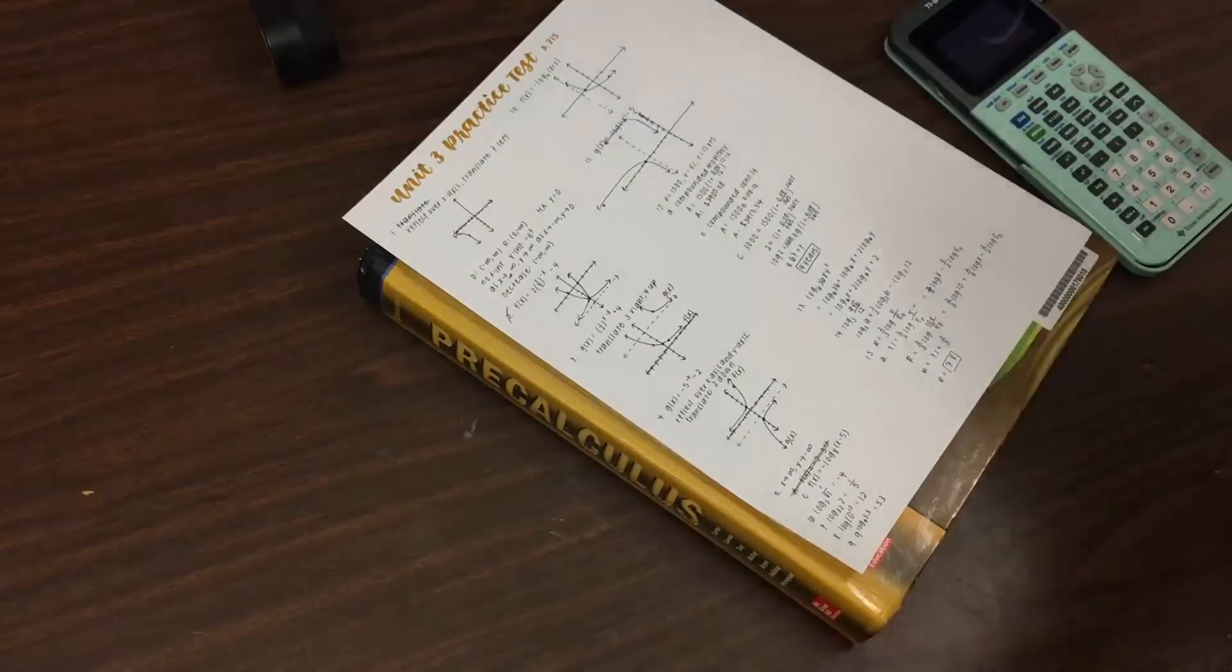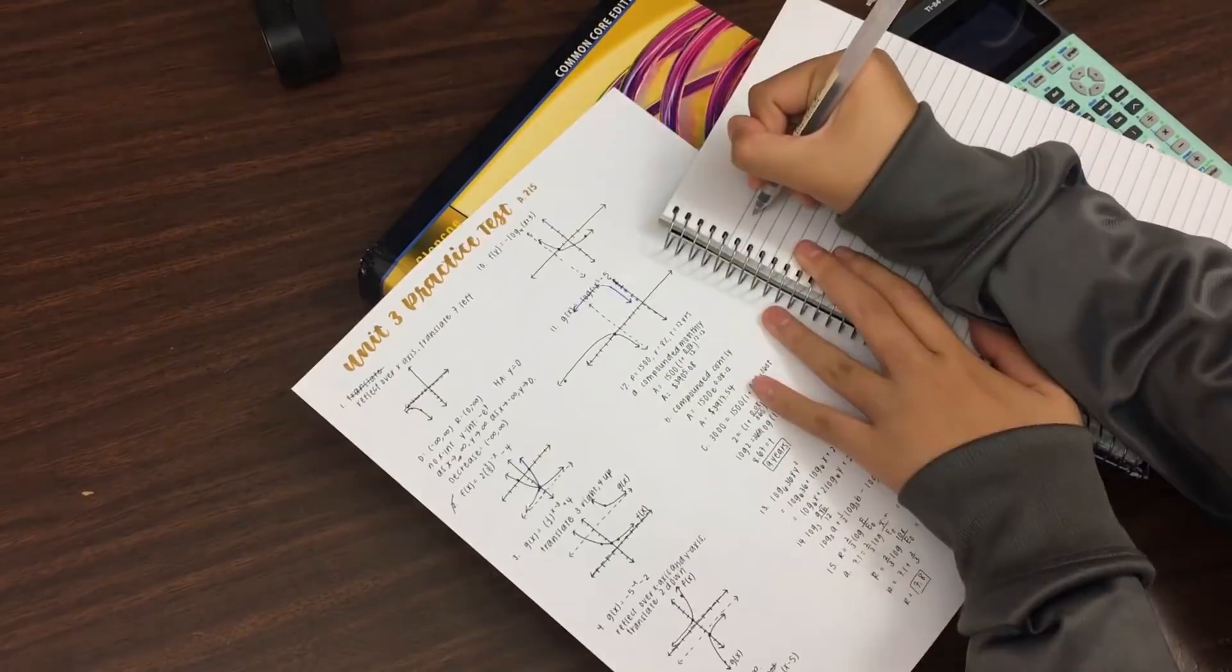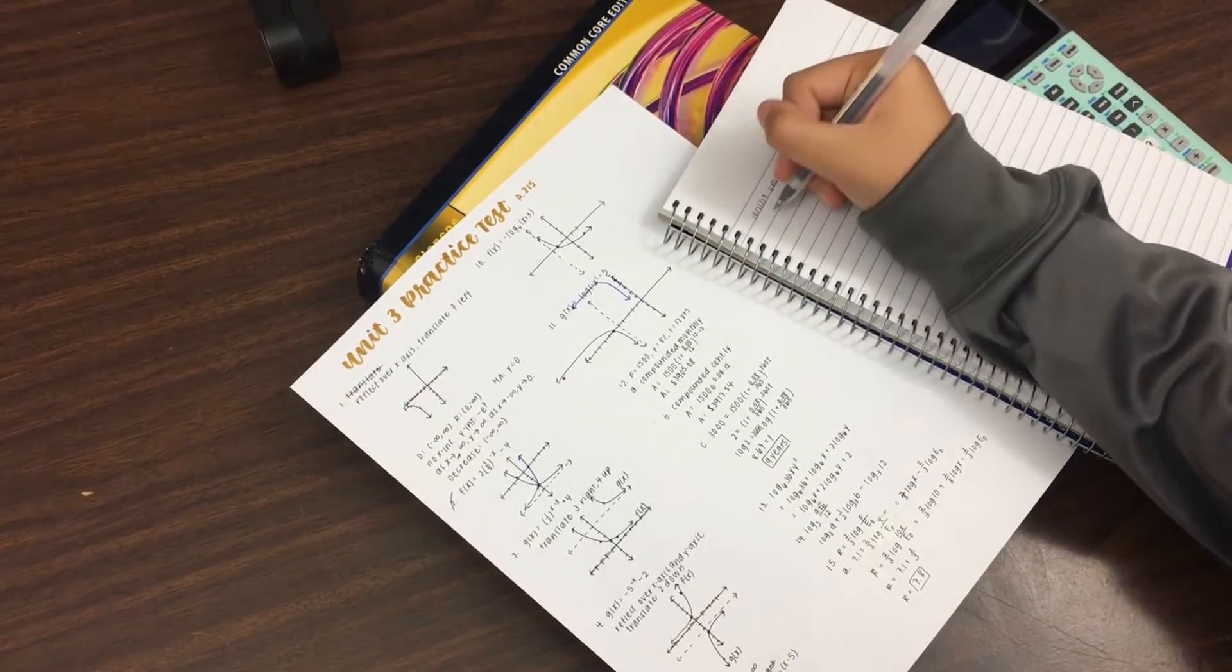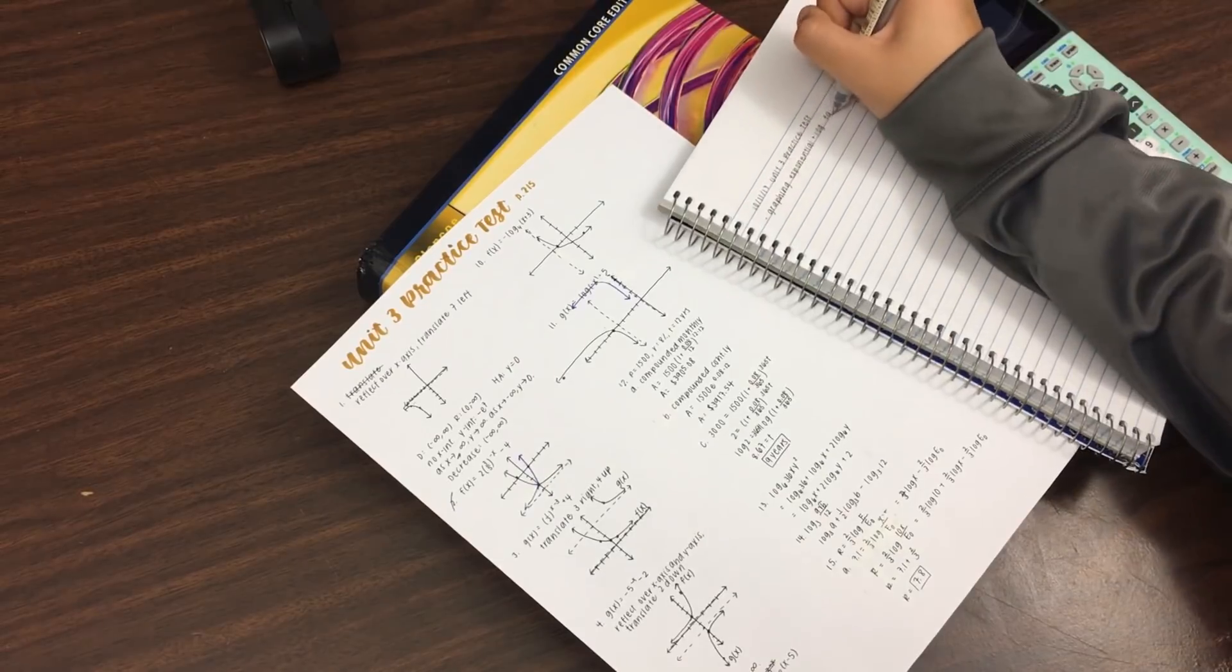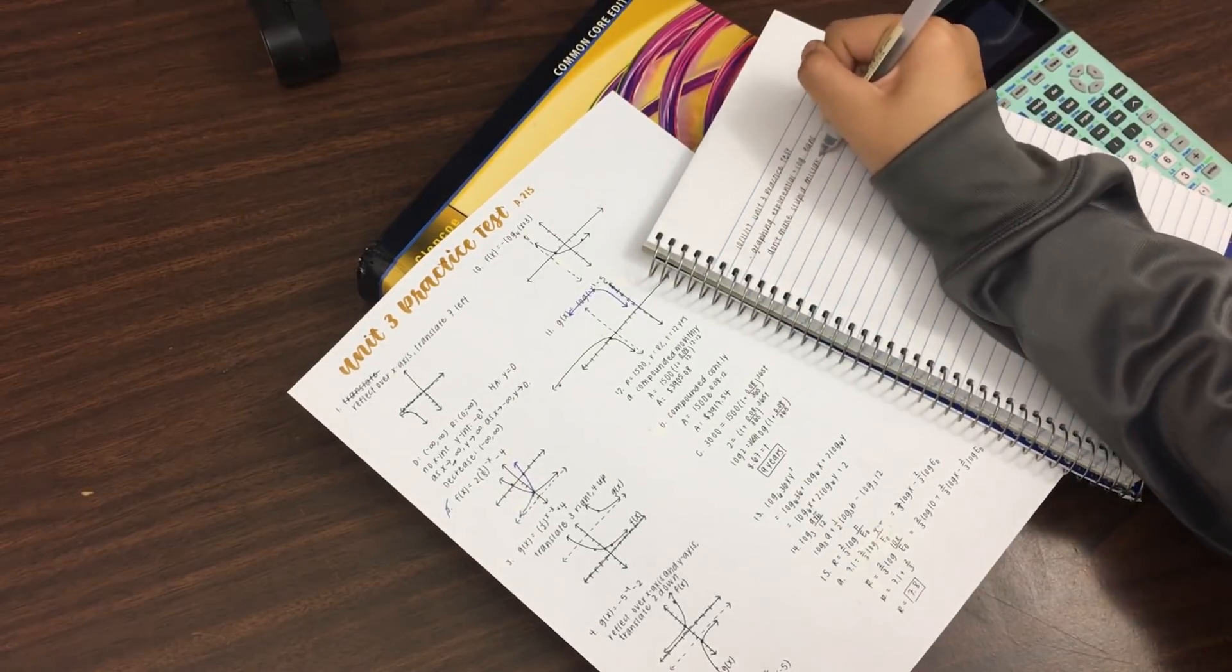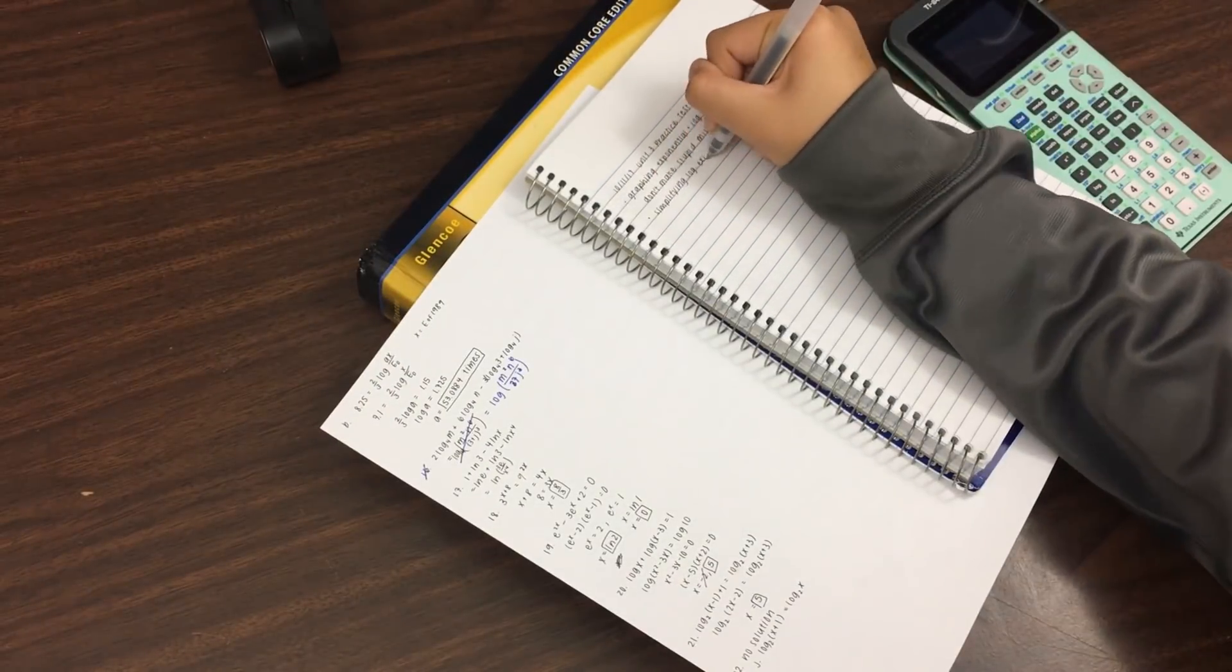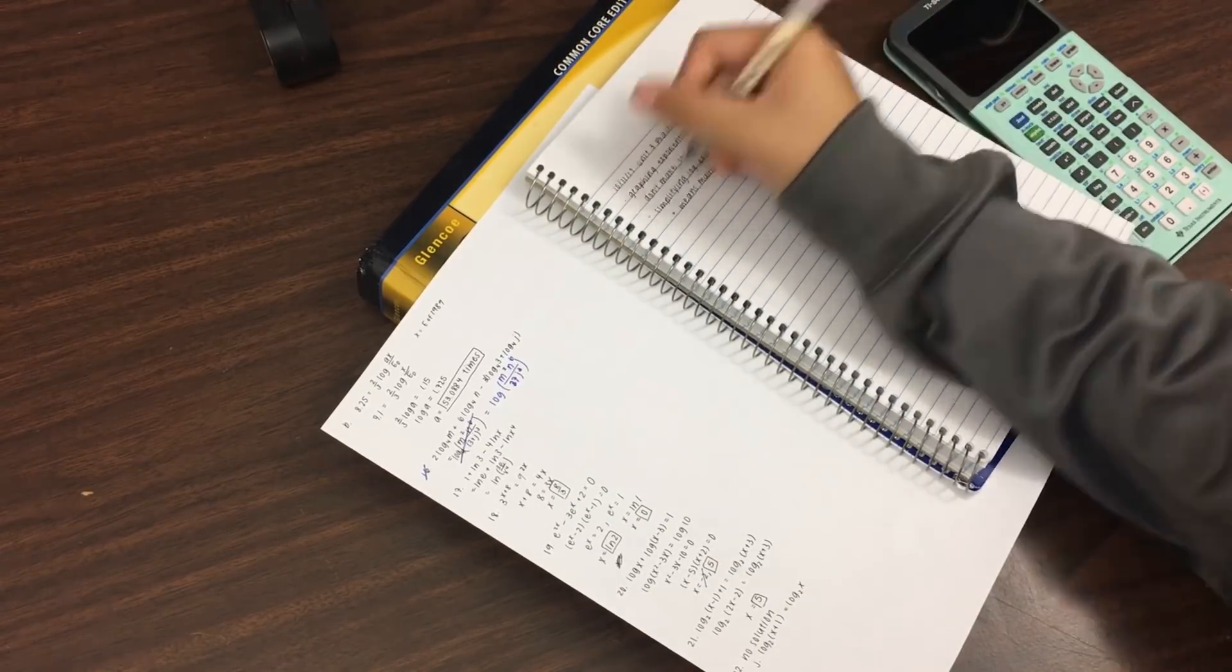And I have this thing called the book of mistakes, where I write down the mistakes that I made. That way, before a test or just regularly throughout the year, I look through the mistakes I've made so that I can be more careful about those things.